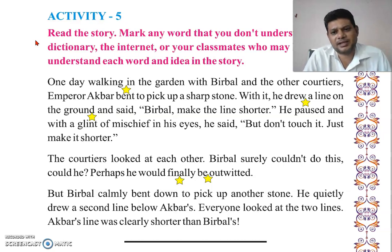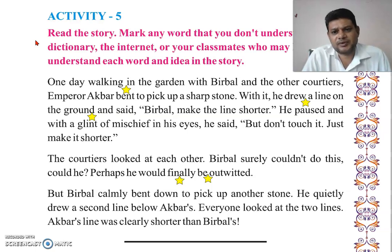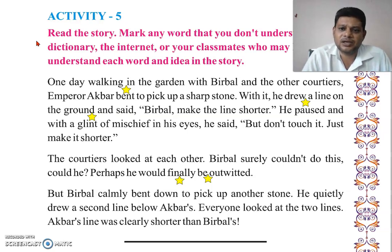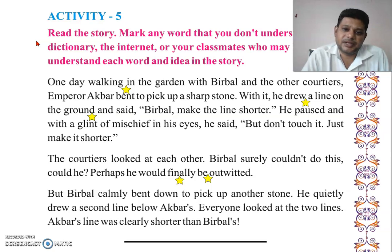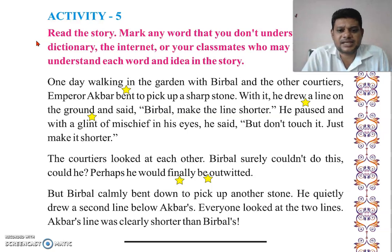In the story: one day, walking in the garden with Birbal and the other courtiers, Emperor Akbar went to pick up a sharp stone. Here is the word 'band' — band meaning what? It means a link or connection.